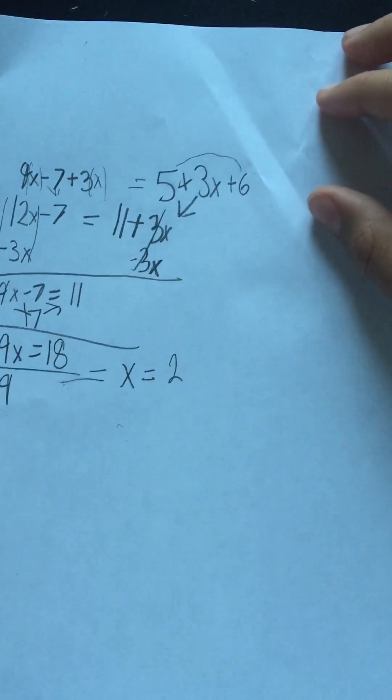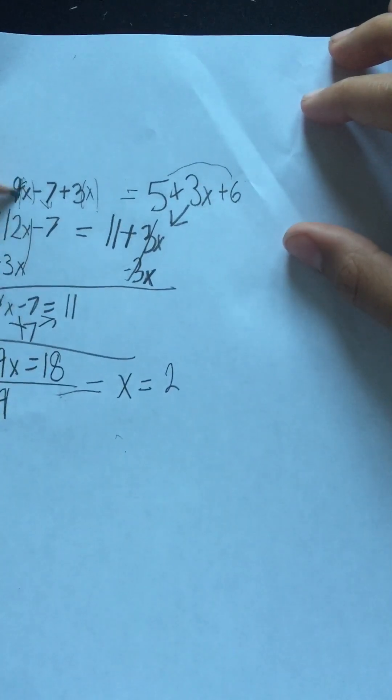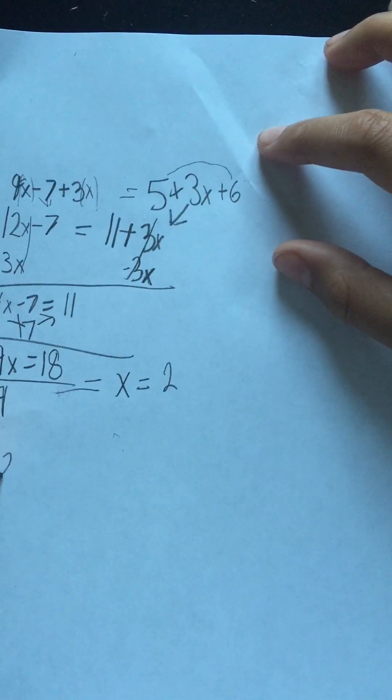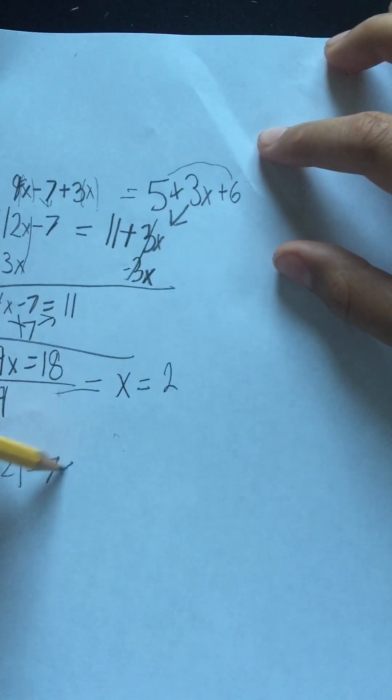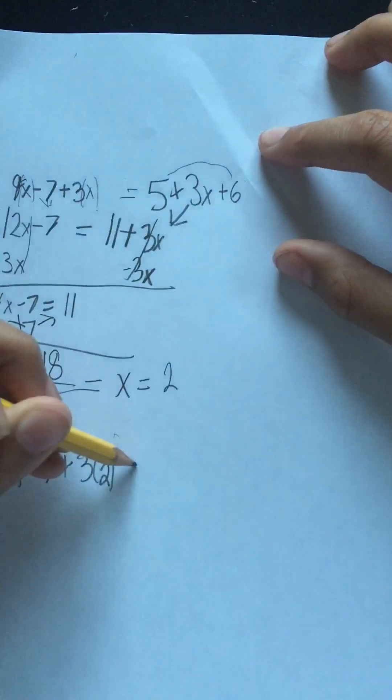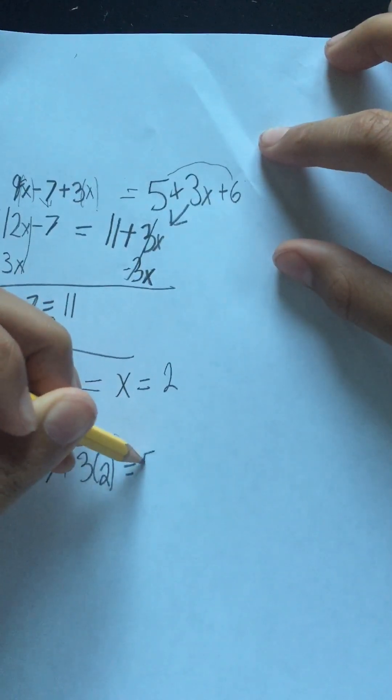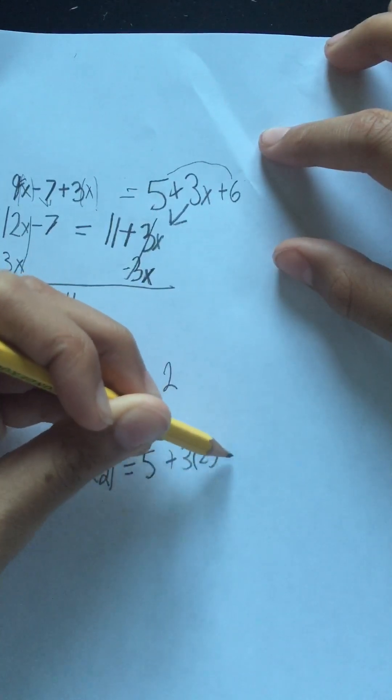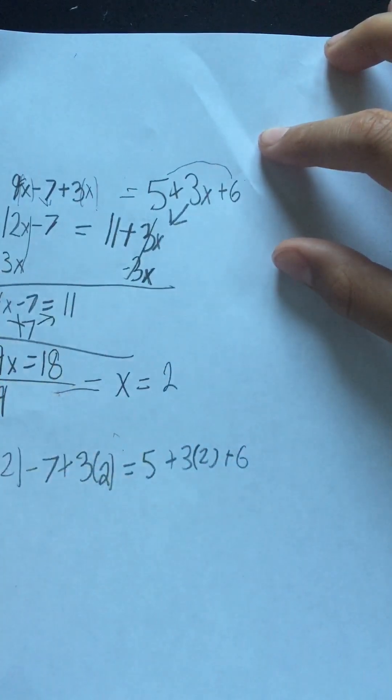Now, just to make sure, we can simplify this, or substitute it, into the equation. So, 9 times 2 minus 7 plus 3 times 2 is equal to 5 plus 3 times 2 plus 6.